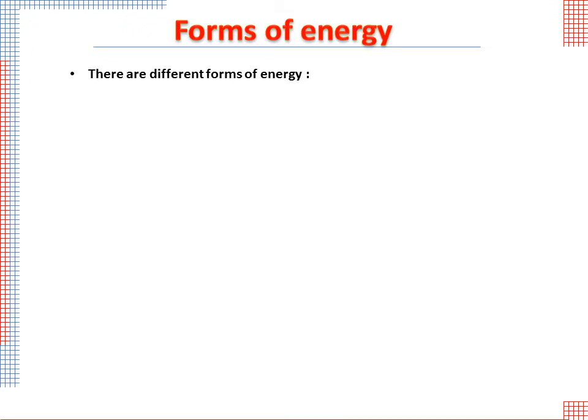Forms of energy: There are different forms of energy - electric energy, mechanical energy, heat energy, chemical energy, and radiant energy. According to the law of conservation of energy,